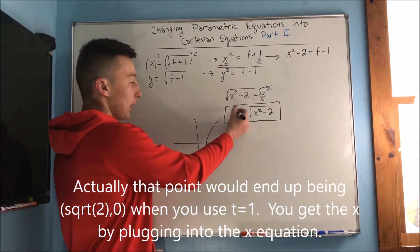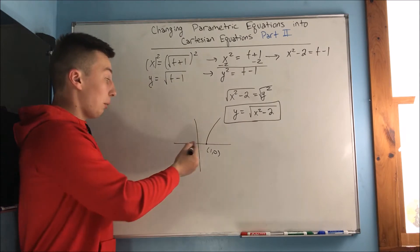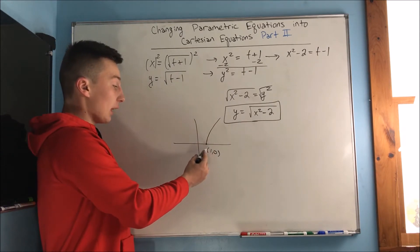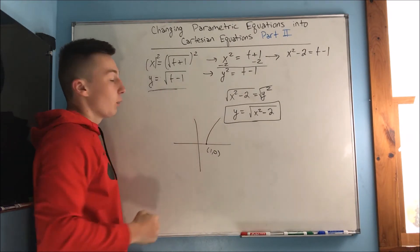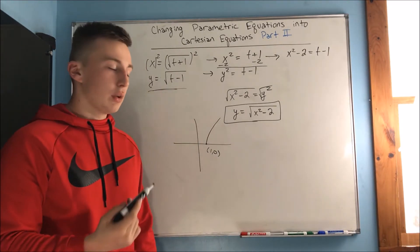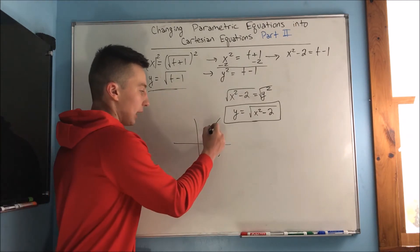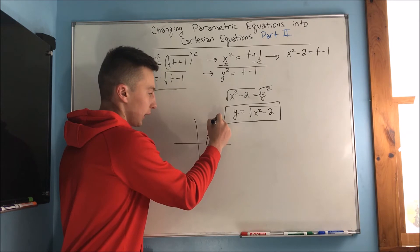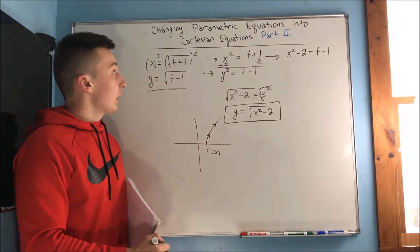We know that t has to be increasing from here. You can even just plug in any number, but if you were to plug in any t's that are less than 1, well then you end up getting a negative under this radical right here, which you can't have. So that means that we know that this graph is going in this direction. So that is part 2 of changing parametric equations into Cartesian equations.